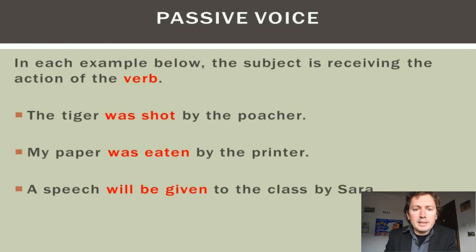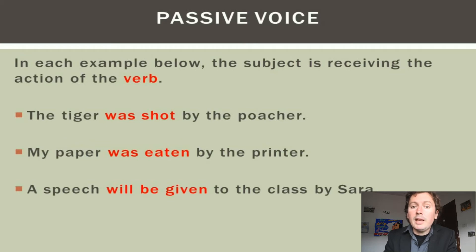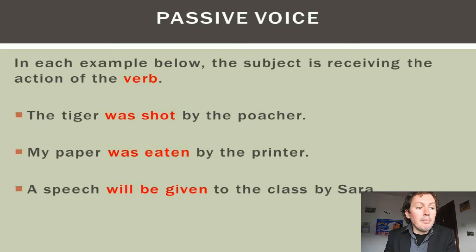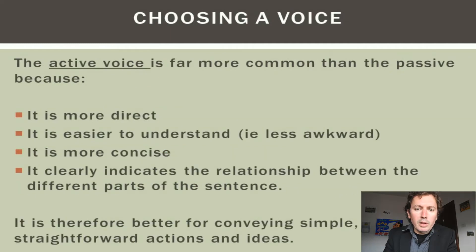In these next examples we've done exactly the same thing — we've flipped the place of the subject and object. What comes first is still considered the subject, it's just now receiving the action of the verb instead of doing it: the tiger was shot by the poacher; my paper was eaten by the printer; and a speech will be given to the class by Sarah.